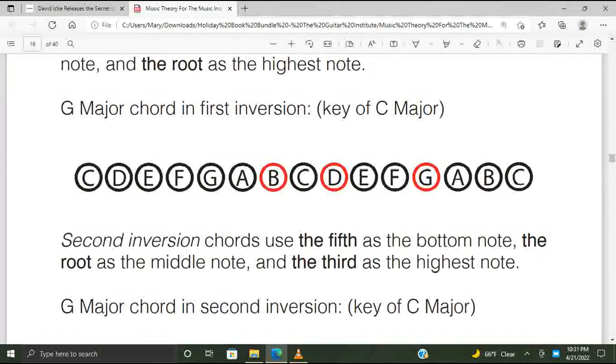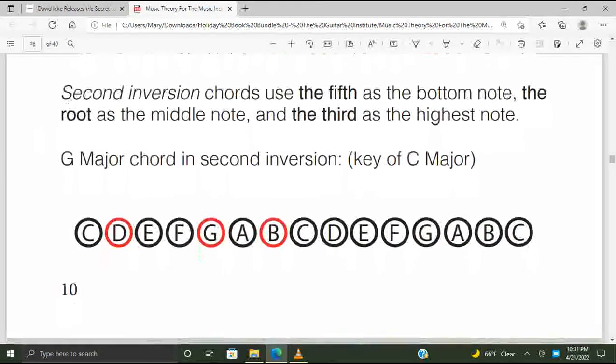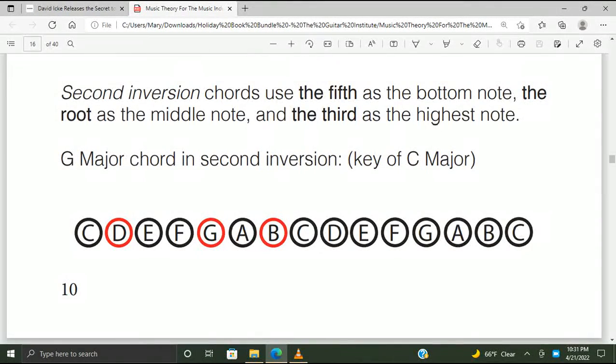The G major chord in first inversion in the key of C major. Second inversion chords have the fifth at the bottom note, the root as the middle note, and the third as the highest note. G major chord in second inversion of the C major scale.